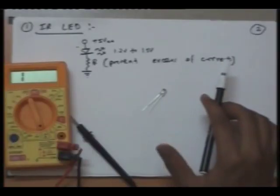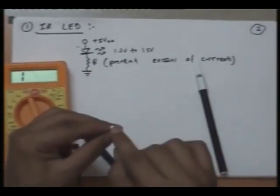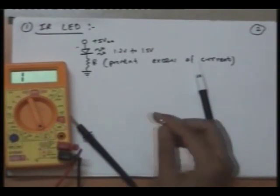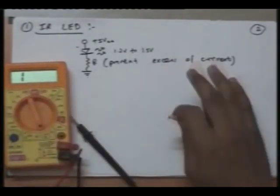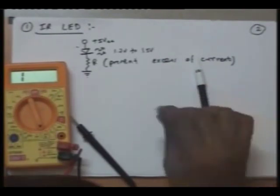People have a misconception that the red dot you just saw when biasing the IR LED is from infrared rays. But mind you, no human eye can detect infrared rays. So how to know whether our IR LED is working or not?